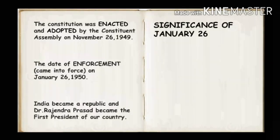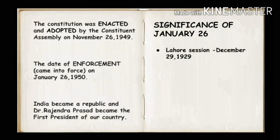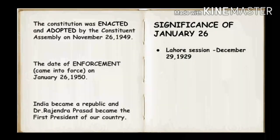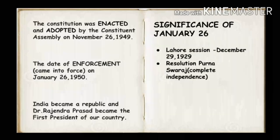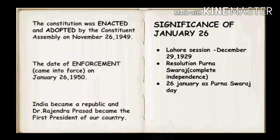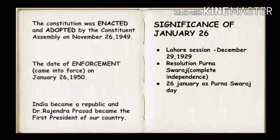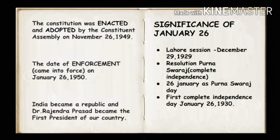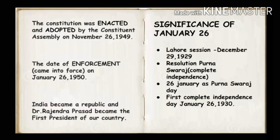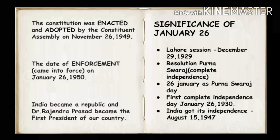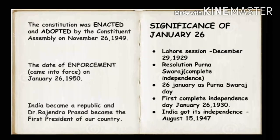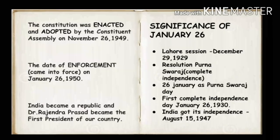January 26th has its historical importance. The Congress session at Lahore on December 29, 1929 had passed a resolution declaring Purna Swaraj — complete independence — as India's goal. It was decided that January 26th would be observed all over India as Purna Swaraj Day. The first complete independence day was celebrated on January 26, 1930, and this continued until India got independence on 15th August 1947. In order to mark honour to that date, the constitution came into force on January 26, 1950.